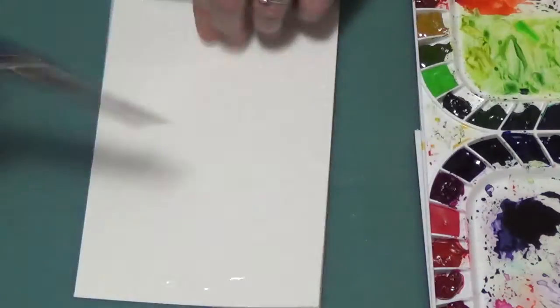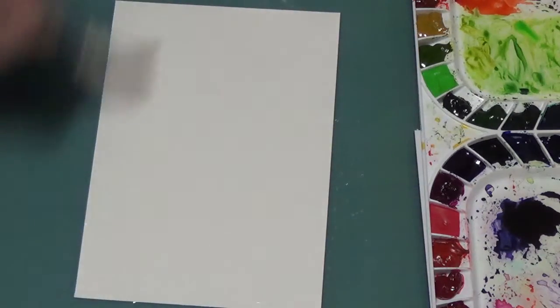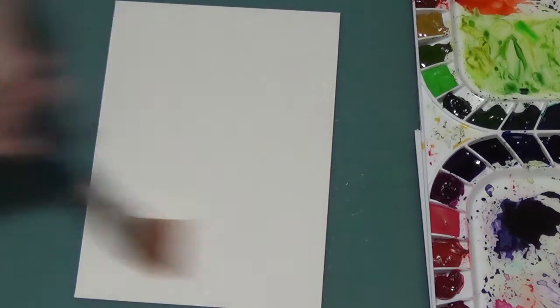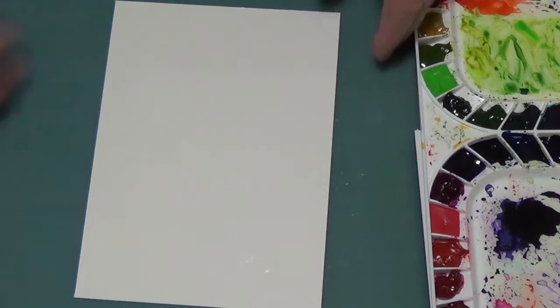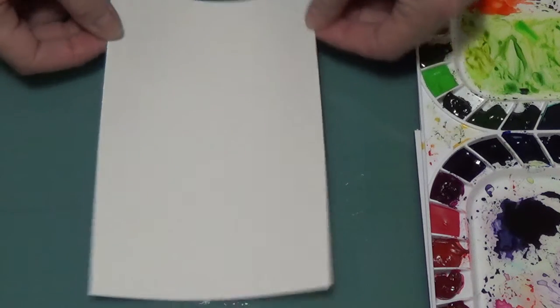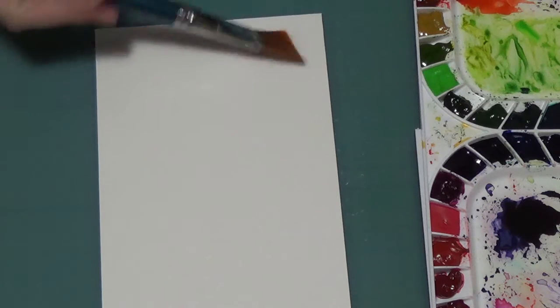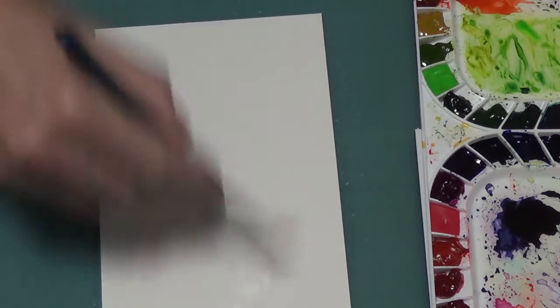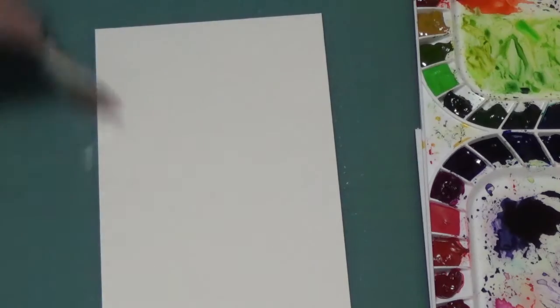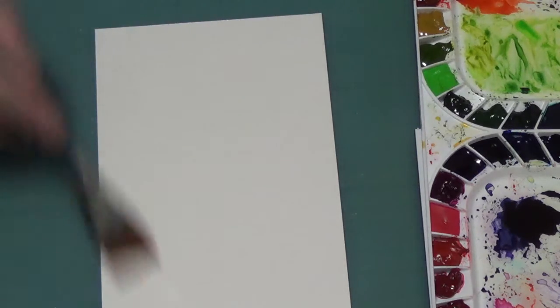I'm going to wet both sides so that we don't have any curling. Try not to use the heat tool because you want it to be organic natural progression with the watercolors and the water. When it starts to dry before you have a large sheet, you can spritz it with water. And I'll show you that as well.